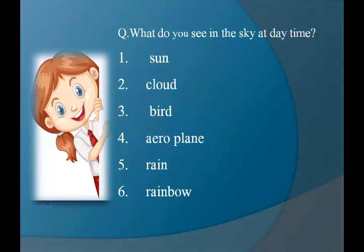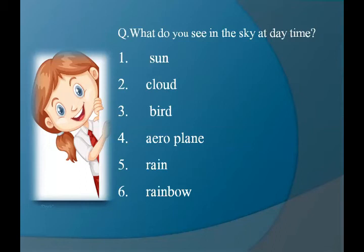The next thing is rain. The spelling of rain is R-A-I-N, rain. We see rain in the sky at daytime. Rain is the main source of water — it gives us water.